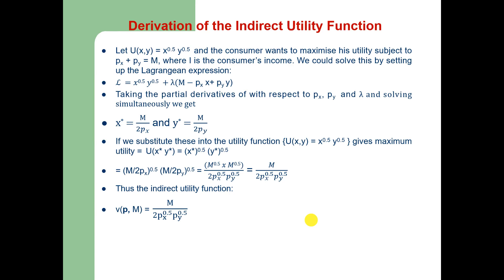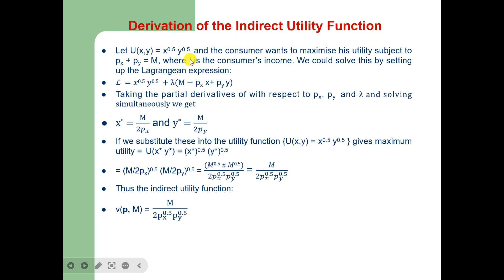We can derive the indirect utility function from the utility function. The utility function is given by U = X^0.5 * Y^0.5, and the consumer wants to maximize utility subject to the budget constraint PX·X + PY·Y = M, where M is the consumer's fixed money income. We solve this by setting up the Lagrangian: L = X^0.5 * Y^0.5 + λ(M − PX·X − PY·Y).